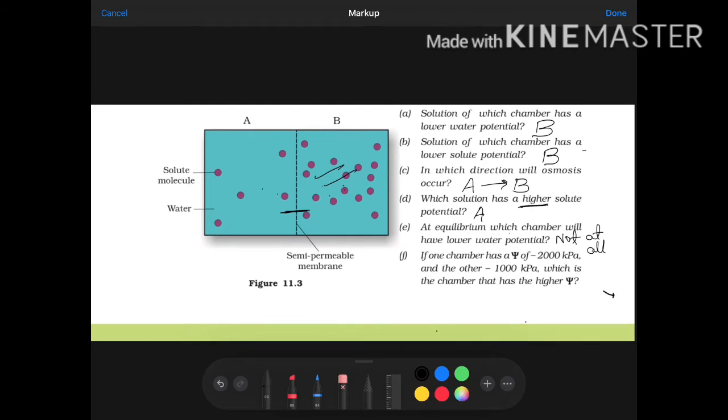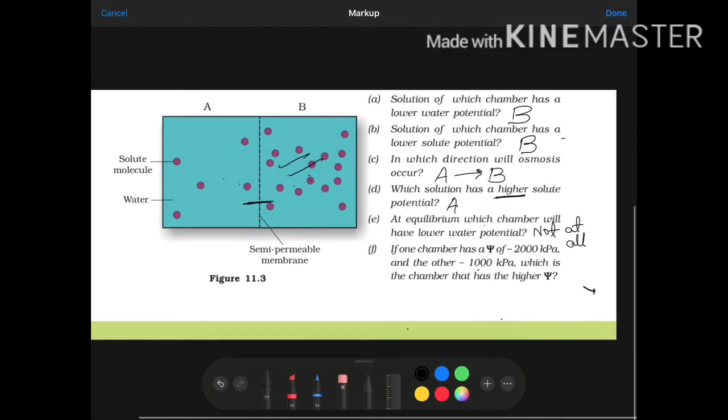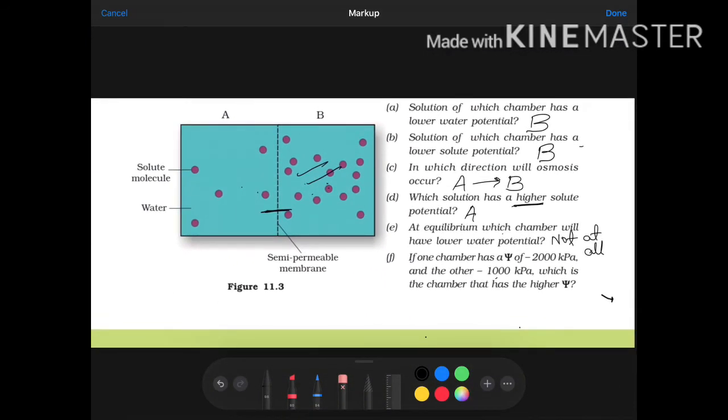If one chamber has phi value of psi minus 200 kPa and the other one is minus 1000 kPa, which chamber has a higher value of psi? So we will say here, which will be higher value, which will be lower value, which means minus 1000. So this answer will be minus 1000.